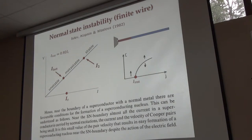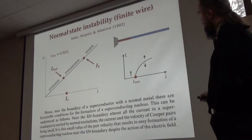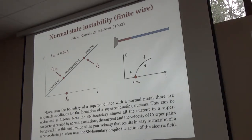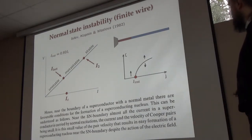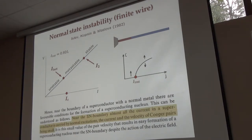They solved the linearized TDGL equation there and obtained that there is another instability current, such that if you are below this instability current, the normal state is absolutely unstable — even a small nucleus that appears would finally propagate and some superconductivity will appear. The general situation is: if the current is smaller than the instability current, the amplitude of the superconducting nucleus grows; otherwise it is metastable and requires some sufficient non-zero amplitude. The conclusion is that nucleation occurs very close to the normal-superconductor boundary.